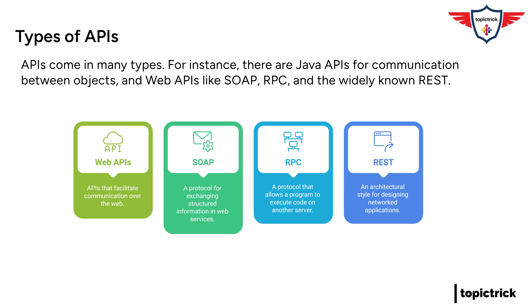What about other types? Well, another one you might have heard of is SOAP, which stands for Simple Object Access Protocol. SOAP is an older type of API, but it's still used in some enterprise settings. SOAP APIs use XML for data formatting, and they can be quite complex to work with — they're often described as being heavyweight, meaning they require a lot of overhead in terms of data transfer and processing. But SOAP does have its advantages, particularly in situations where security and reliability are paramount.